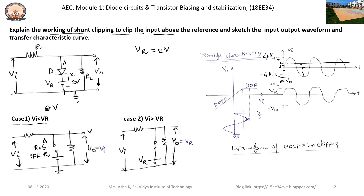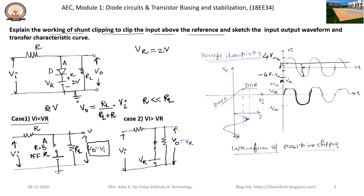Hence, the diode D reverse biases and acts as an off switch. If we measure the output voltage across the load resistance RL using the voltage divider rule, the output voltage equals RL divided by (RL plus R) into V-input. When R is very much lesser than RL, the output voltage will be equal to the input voltage. Whatever voltage is applied to the clipping circuit will appear across the load resistance, as shown in this graph.